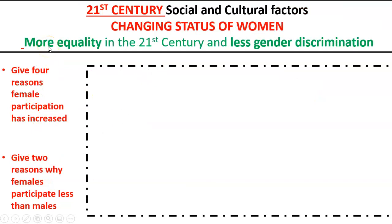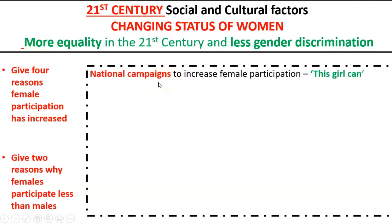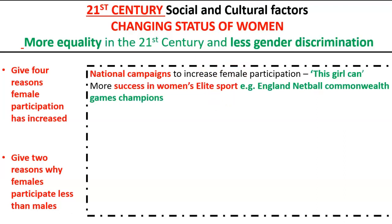Let's look at the changing status of women. Finally we are in a position where this makes sense — women's status did change in the 21st century due to more equality and less gender discrimination. We need to give four reasons female participation has increased. First, national campaigns such as 'This Girl Can' really promote female participation. Second, more success in women's elite sport — for example, England Netball being Commonwealth Games champions — filters down to more people wanting to take part.